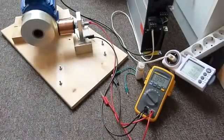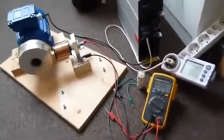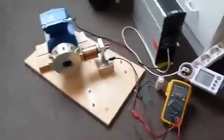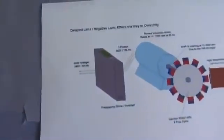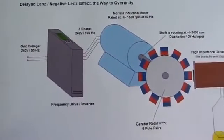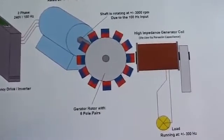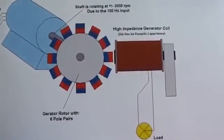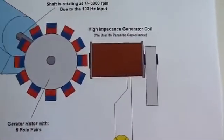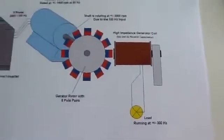And the only thing that I also wanted to show you is this, this is the schematic so that you have all the parameters. Normal induction motor, frequency drive controller, rotor with 12 magnets on it, high impedance coil, and the load connected to it. This is my setup.